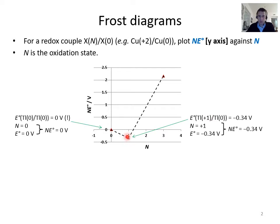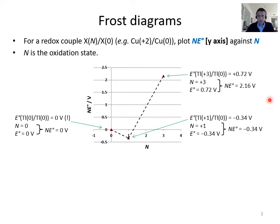Moving along the diagram, we have the point for oxidation state +1. The standard reduction potential for Ta⁺¹ + e⁻ → Ta is −0.34 V, so 1 × (−0.34 V) = −0.34 V. That's where this point appears on the diagram.